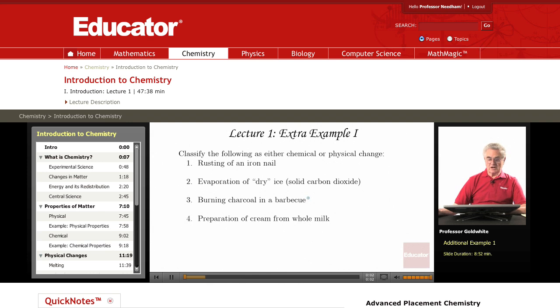Problem: Extra Example 1 for Lecture 1. You're asked to classify whether certain observed changes are either chemical or physical. So let's remind ourselves what these terms imply. A chemical change means we're forming new compounds.